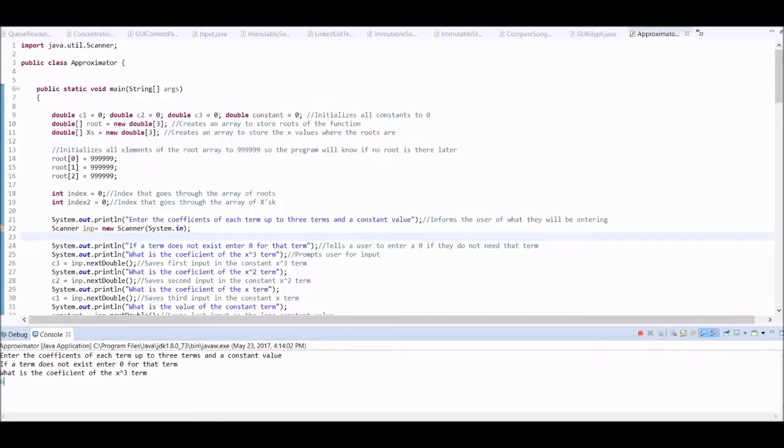This value is saved as a c3 term, which we initialized, and now that holds that value. We can do the same for x squared, and this program works for decimals as well. For the x squared term, I will input 4 as a coefficient.